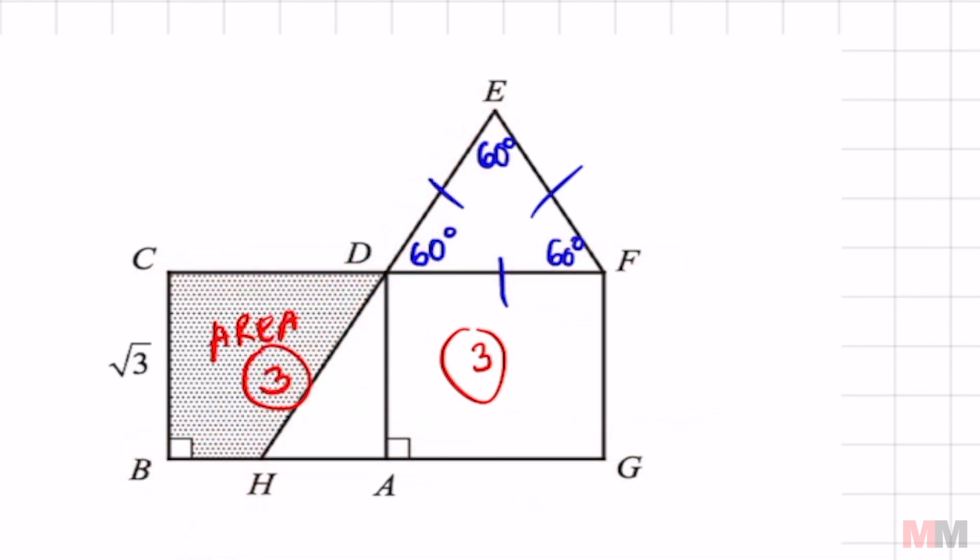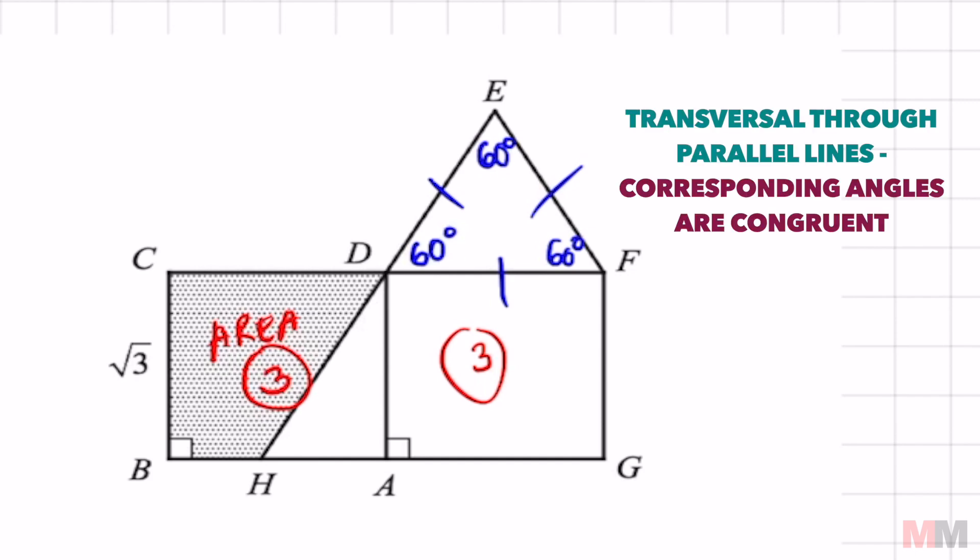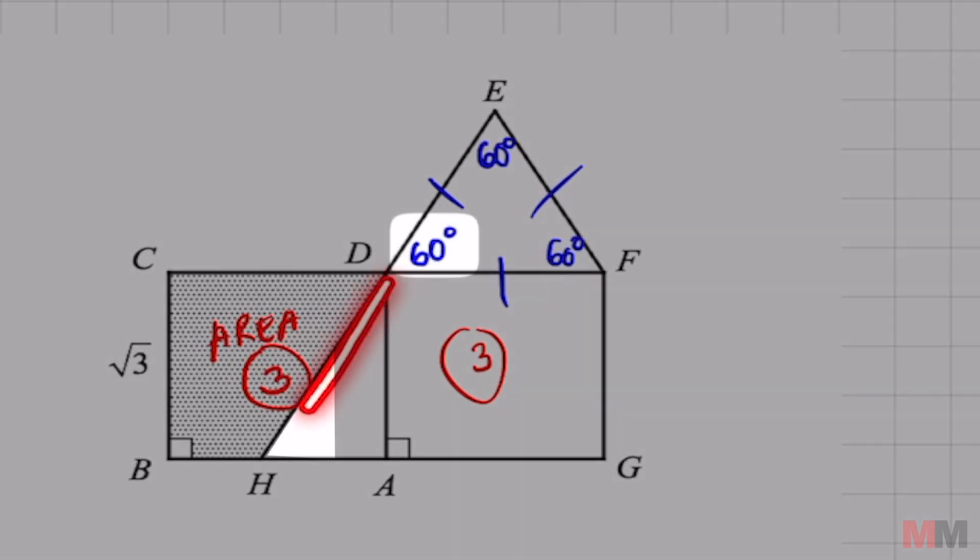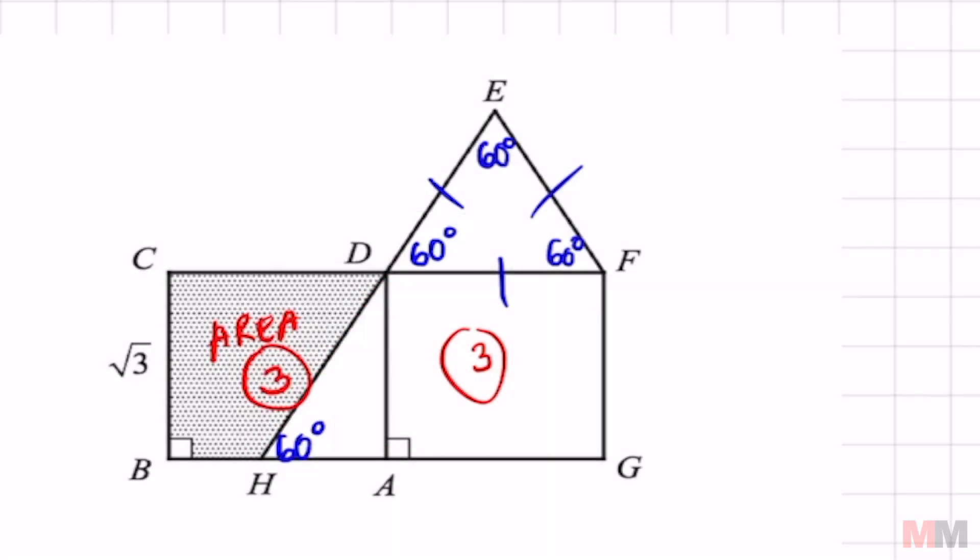Well, what do you know about a transversal and parallel lines? It's that the corresponding angles are congruent. If this is 60 degrees, then you know that angle DHA is going to also be 60 degrees.